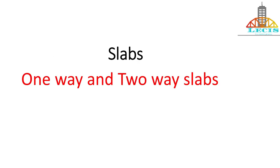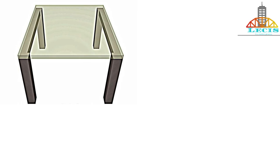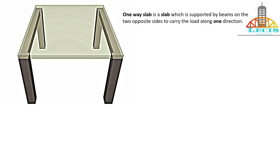Structurally, slab is classified into two classes: one-way slab and two-way slab. Let's move on to one-way slab. This is a simple sketch showing a slab panel supported by beams in two directions. The basic definition of one-way slab is: a slab which is supported by beams on two opposite sides to carry the load along one direction.